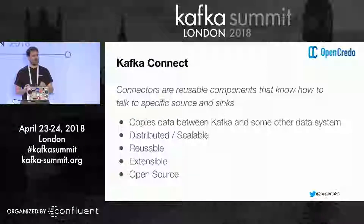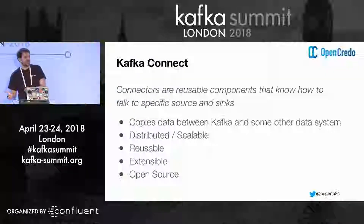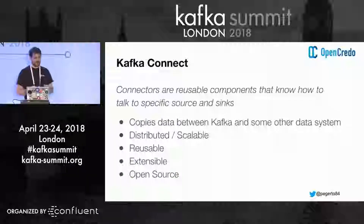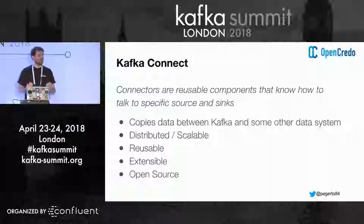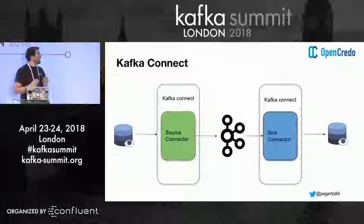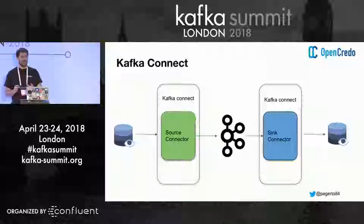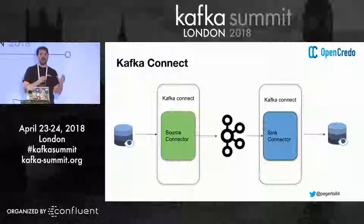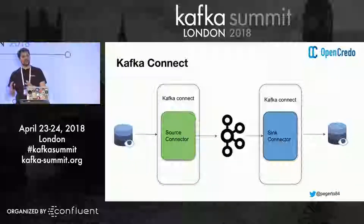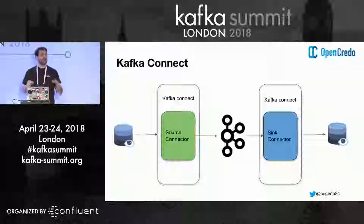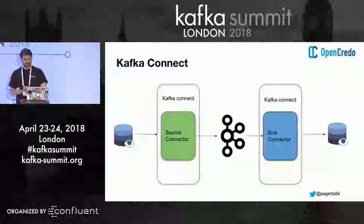Kafka Connect comes with the Kafka ecosystem framework. The main purpose of Kafka Connect is to copy data from Kafka to an external system and from an external system back to Kafka — that's probably something you're familiar with. It is distributed and scalable. One of the main components in Kafka Connect is the connector, and the connector is reusable — so we probably don't need to write any code. There are two different kinds of connectors: the source connector, which takes data from a specific data source and publishes it into the framework as records, and the sink connector, which takes a bunch of records and writes them back to a data store.